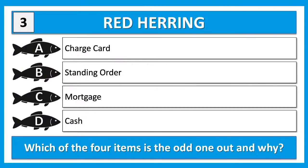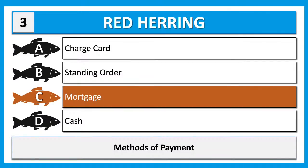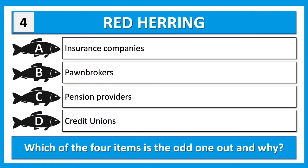Third one: charge card, standing order, mortgage, and cash. Which one is the odd one out and what is the link between the remaining three? Most people typing in C — the answer is indeed C. They're all methods of payment apart from mortgage, which is a method of borrowing.